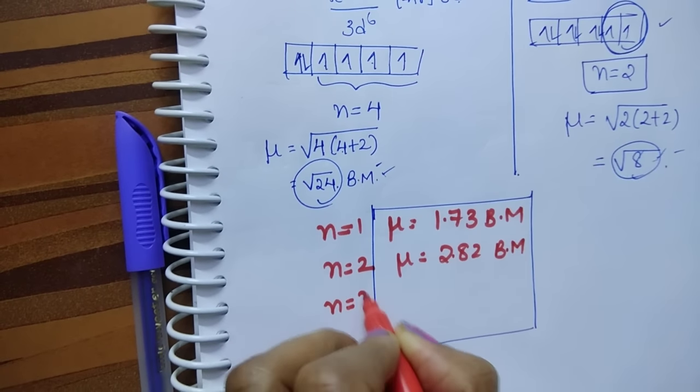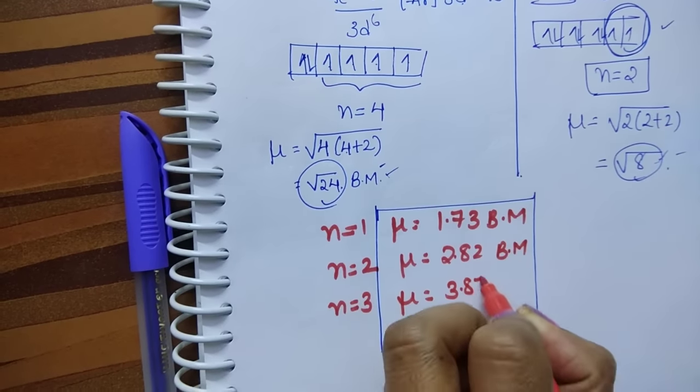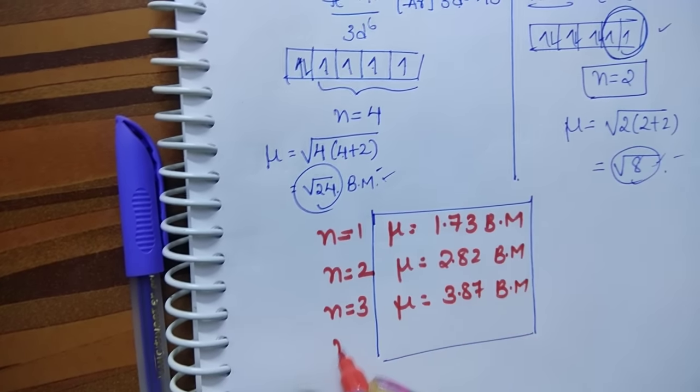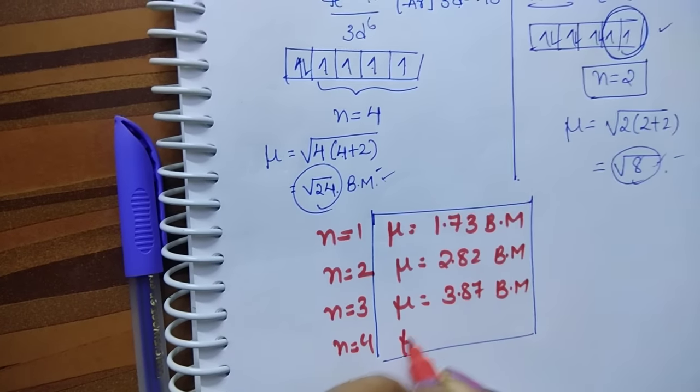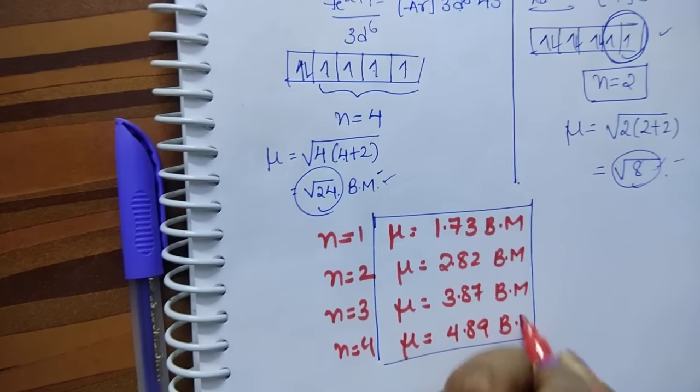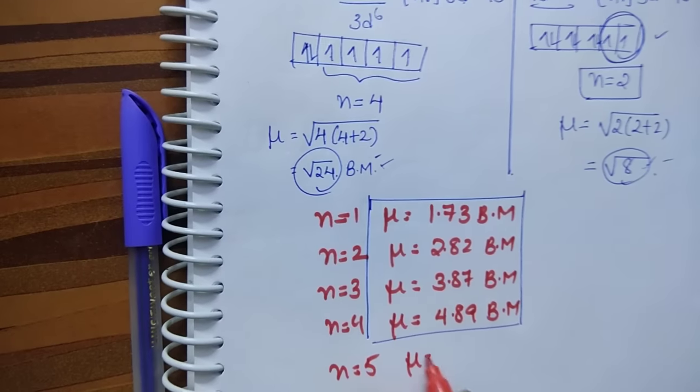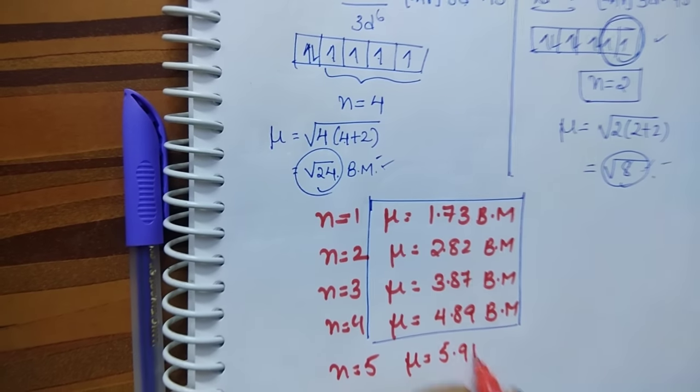If n equals 3, then μ value is 3.87. If n equals 4, then you get 4.89 Bohr magnetons. If n equals 5, then you get 5.91 Bohr magnetons.